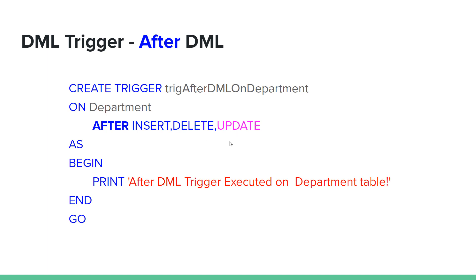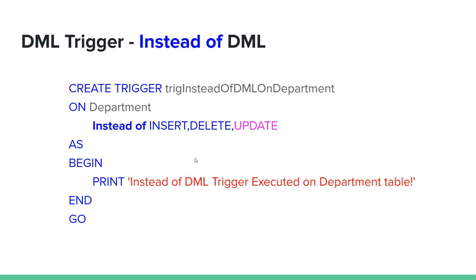When a specific event fires the trigger, it will be executed and a print statement can output a message. This is the after DML trigger. Now let's look at the instead of DML trigger.